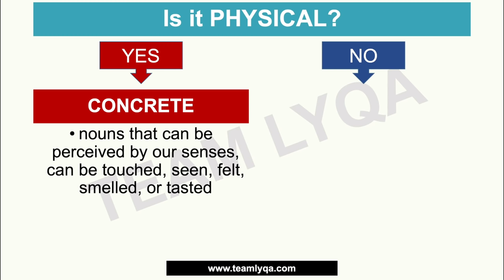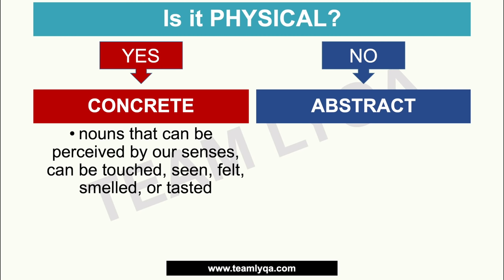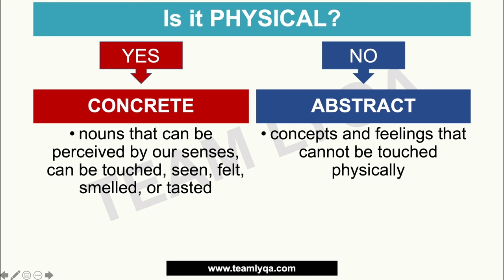If it's not physical — if it might be an idea or a feeling — that is an abstract noun. Abstract nouns are concepts and feelings that cannot be physically touched. We have words like love, joy, or peace. These are words you cannot hold with your hands. They're not tangible. These are feelings, so they are abstract nouns.